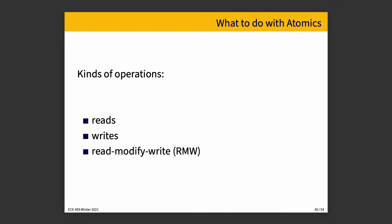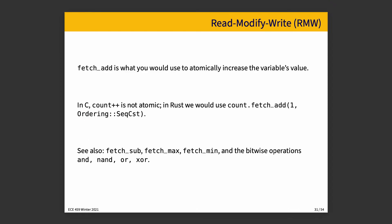In Rust, we would use an appropriate function: it is fetch_add. You would provide the value that you want to add — one — and then once again you specify ordering sequential consistency. So fetch_add is the example for atomically increasing the variable's value. You specify exactly how much you want to add and the ordering. It is maybe a little tedious to repeat the ordering every single time, but it is necessary in Rust.